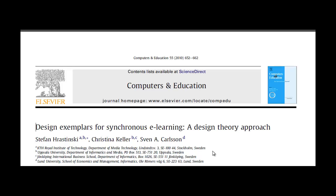Another way to find articles — and I find it a very effective way — is to look at the reference list of articles that you think are really good or really focus on the topic you want to look at. In this case, I'm looking for synchronous learning and e-learning, and here we have 'Design Exemplars for Synchronous E-Learning.' These are exemplars, so there might be some good stuff in this article.